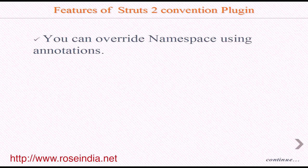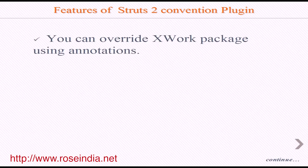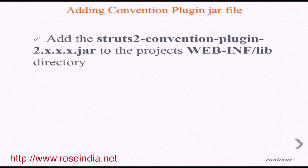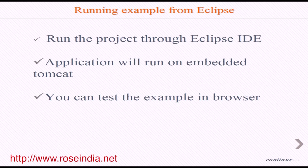SEO-compliant URLs are also supported — for example, MyAction will be changed to my-action. You can also use annotations to override the default action name, namespace, and XWork package. To write the code, first we'll write HelloWorldAction.java, then the JSP files: index.jsp and example/helloWorld.jsp. Then we'll add the Struts 2 libraries, including the convention plugin JAR, to the project's WebContent/WEB-INF/lib directory.